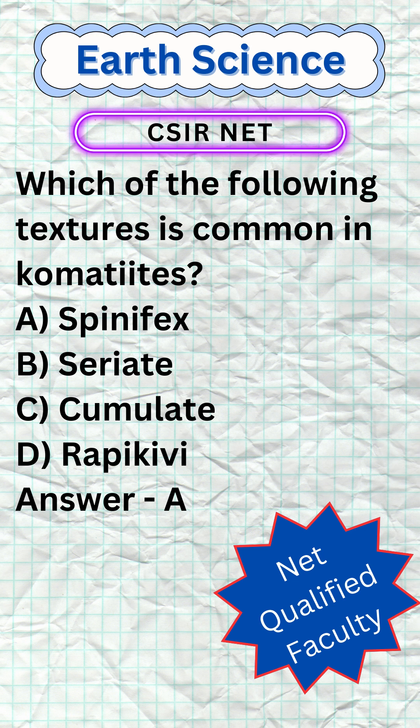Rapakivi texture is a textural term describing the development of plagioclase rims around alkali feldspar ovoids in granitic rocks. The name comes from the Finnish words 'rapa' meaning mud or sand, and 'kivi' meaning rock. Rapakivi texture is characterized by a mixture of mantled, non-mantled, and partly mantled ovoids. The ovoids can be large or small, and they can be concentrically zoned, plastically distorted, fragmented, and re-aggregated. Some ovoids can be remarkably spherical.